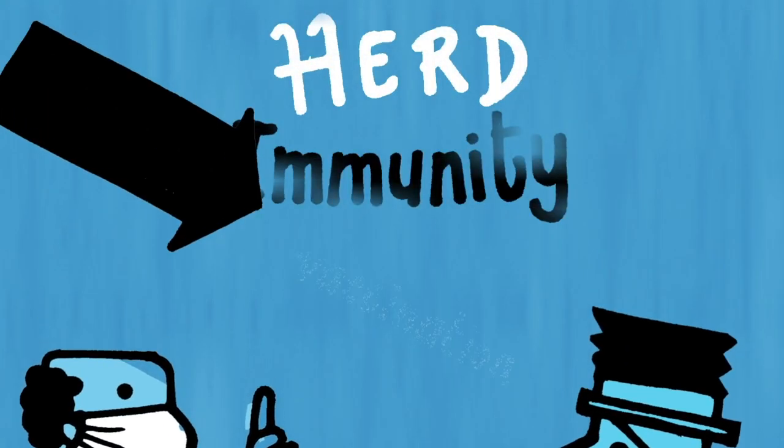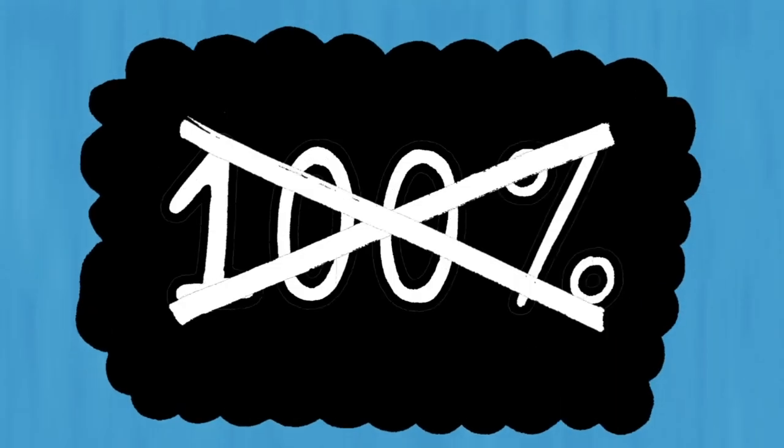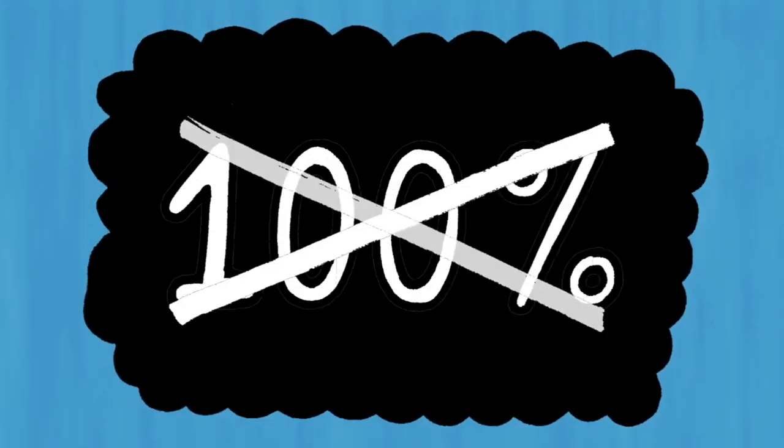Wait a second! If we want to reach herd immunity via vaccinations, we need to consider the efficacy of the vaccine, which is not 100%. And also, remember that R0 depends on the characteristics of the virus, as well as on our behaviors!